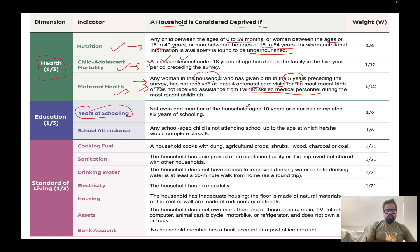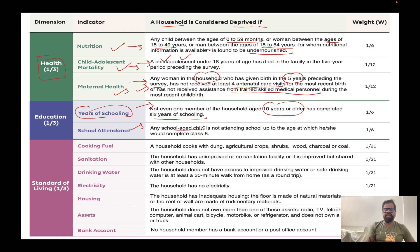In education, for years of schooling, if no member of the household aged 10 years or older has completed six years of schooling, that household is considered deprived. For school attendance, if any school-age child is not attending school up to the age at which they are expected to complete Class 8, that household is considered deprived.